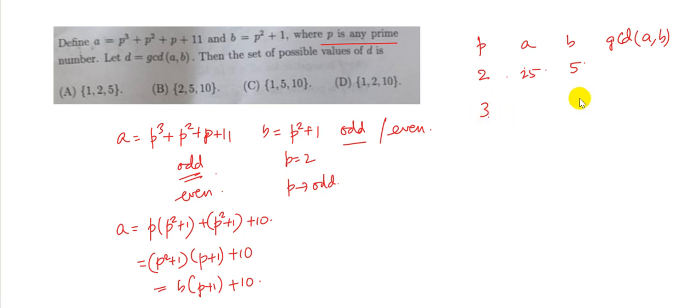So if p is 3, then b becomes 10 and a becomes 10 into 4, 40 plus 10, 50. If p is 5, then b will be 5 square plus 1, 26, and a would be 26 into 6 plus 10 which would be 156 plus 10 that is 166. And if p is 7, b would be 50 and a would be 7 plus 1, 8 into 50 which is 400 plus 10 which is 410 and it will go on like this.